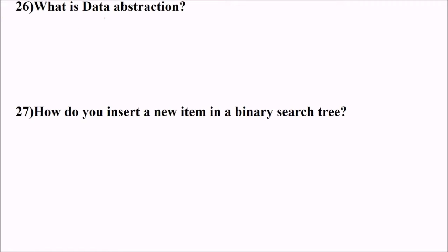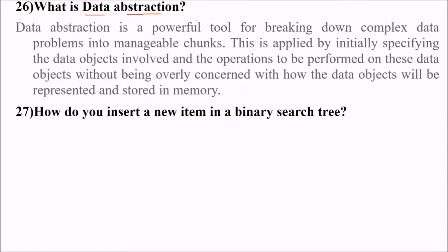What is data abstraction? Data abstraction means something which is hidden or abstracted or has a clear distinction. Data abstraction is a powerful tool for breaking down complex data problems into manageable chunks. This is applied by initially specifying the data objects involved and the operations to be performed on these data objects without being overly concerned with how the data objects will be represented and stored in memory.